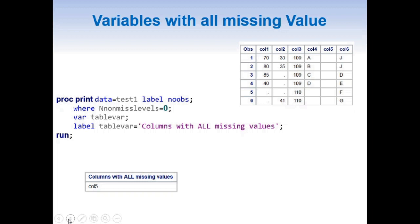For the report on variables with all missing values, we use the same PROC PRINT with two changes: the WHERE clause becomes WHERE NNonMissLevels equal to 0, and the LABEL statement is updated so TableVar is labeled 'Columns with All Missing Values.' This creates the report as shown.